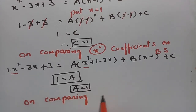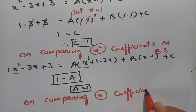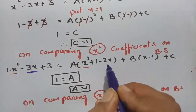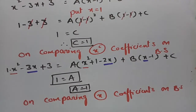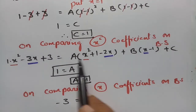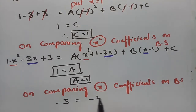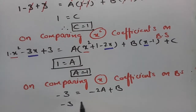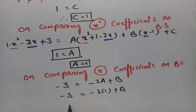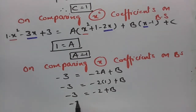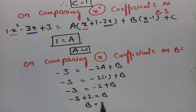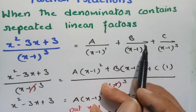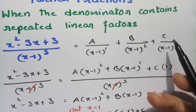Now comparing x coefficients on both sides: on the left the coefficient of x is -3. From the right-hand side, the x term from A(x-1)² gives -2A, and from B(x-1) gives B. Substituting A=1: -3 = -2(1) + B, so -3+2 = B, therefore B = -1.